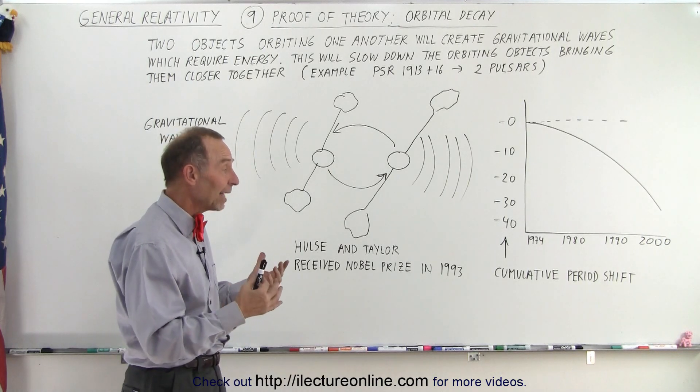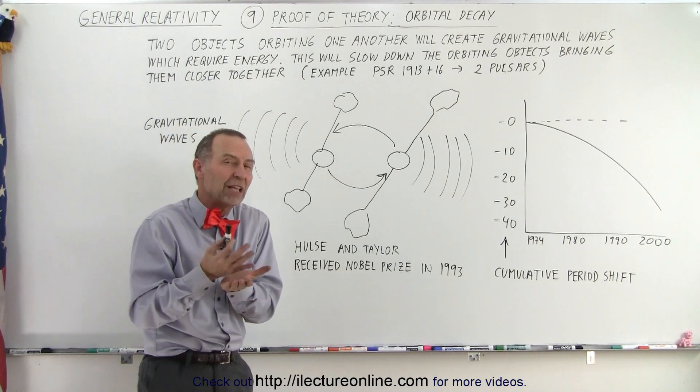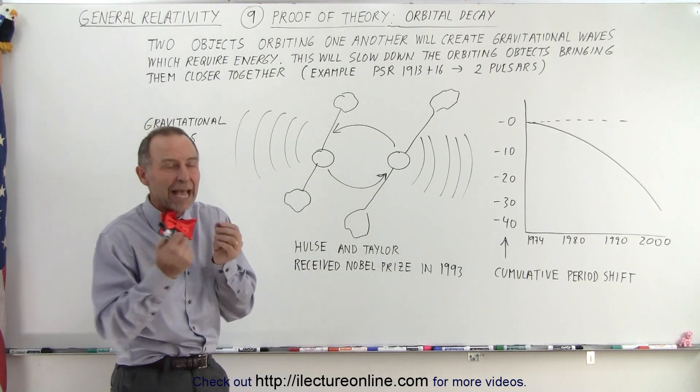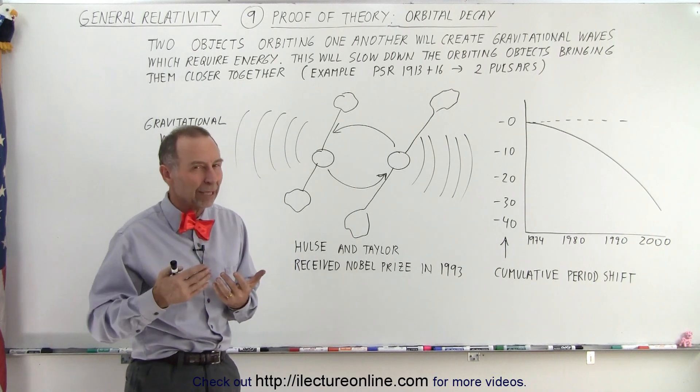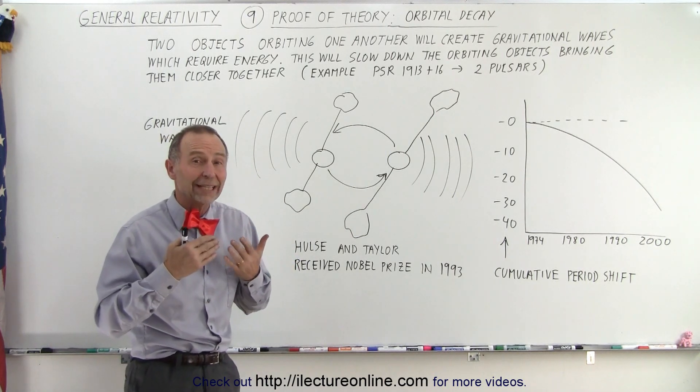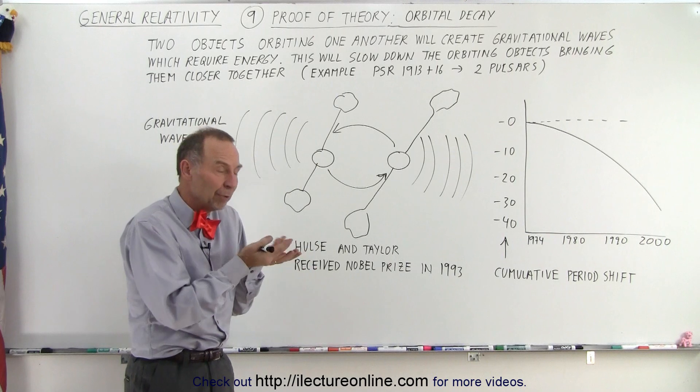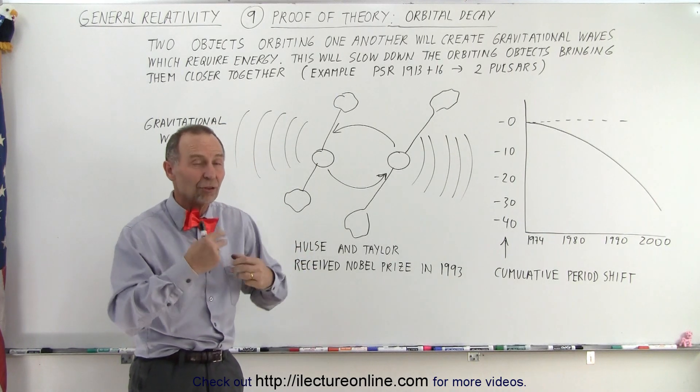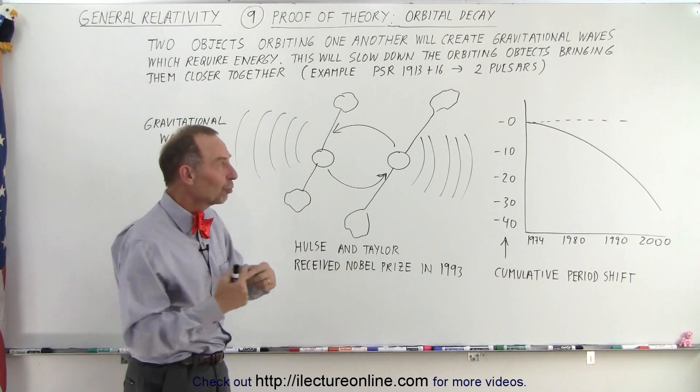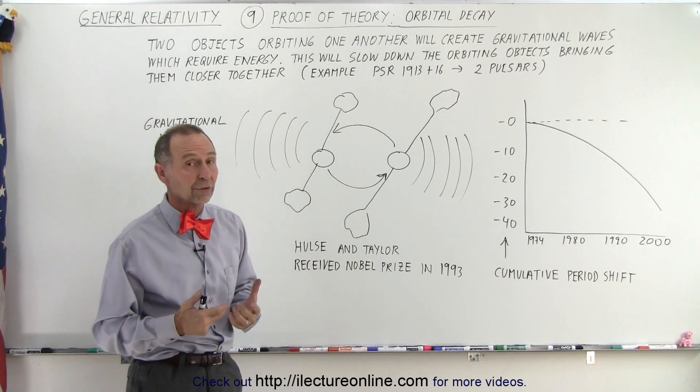Because of that, they actually proved that gravitational waves exist indirectly, not by actually observing the waves, because they weren't able to detect those yet, that came later, but they were able to show that they had to be real, they had to be there, because the energy in creating the gravitational waves was leaking off the system, and the rotations of those particular pulsars were slowing down over time.